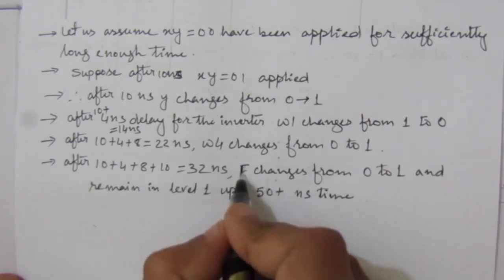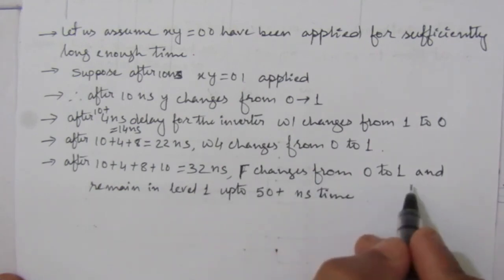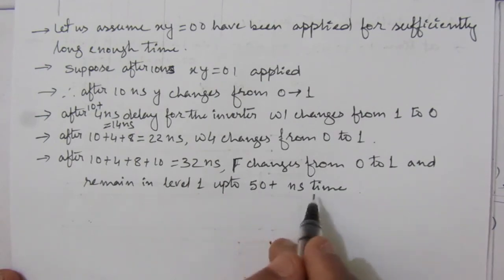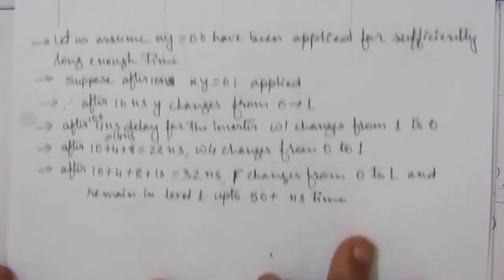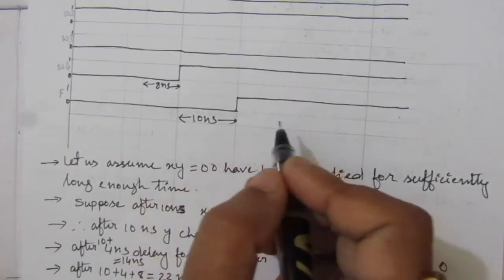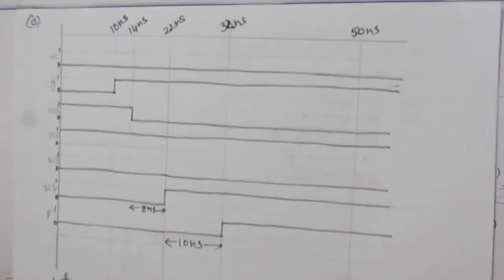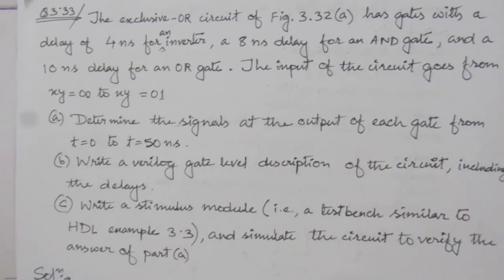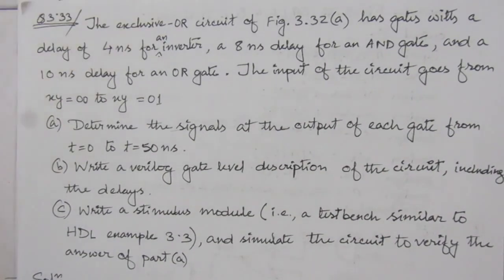F changes from zero to one at 32 nanoseconds and remains at level one up to 50 nanoseconds and beyond. This completes the analysis. Thank you for watching. If you have any questions, please put them in the comment section below. Also like, share, and subscribe to my channel. Thank you.